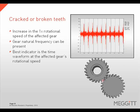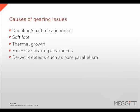Cracked or broken gear teeth will increase the amplitude of the 1x rotational speed vibration peak. The gear's natural frequency can also be present; however, the best indicator of cracked or broken gear teeth is found in the waveform, where impacting spaced at the rotational speed of the damaged gear will be evident. Many factors can cause gear related problems, such as coupling or shaft misalignment.